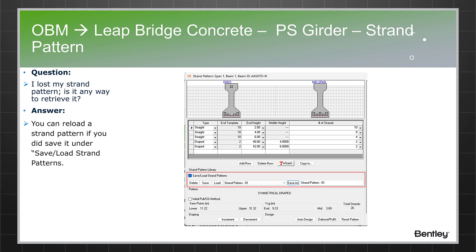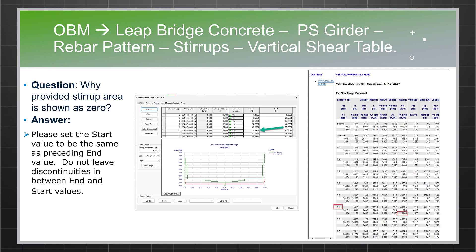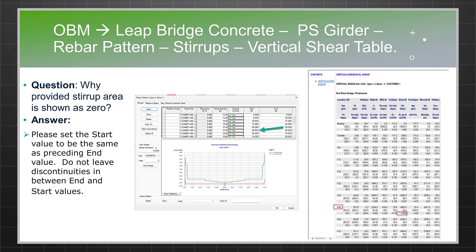Regarding rebar patterns, stirrups, and the vertical shear table: sometimes designers create discontinuities between the start and end locations of stirrups. The program cannot read those locations and shows a zero value for the provided stirrup area in the output table. The fix is to set the start value equal to the preceding end value — removing all discontinuities — after which the program will correctly display the provided area value.